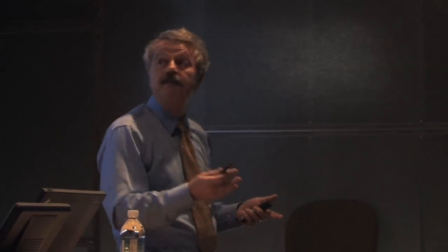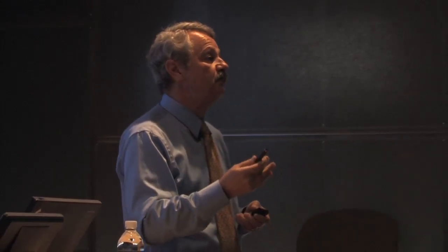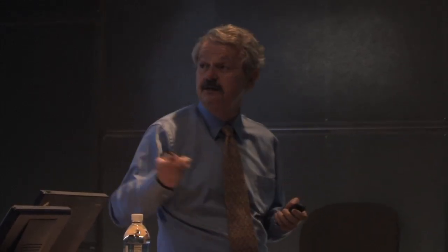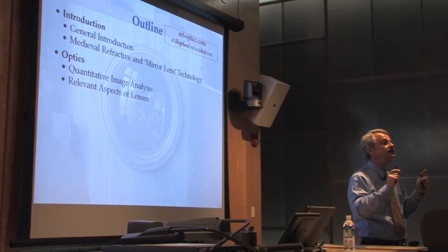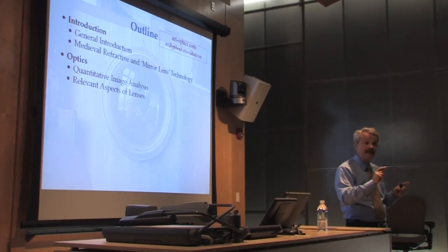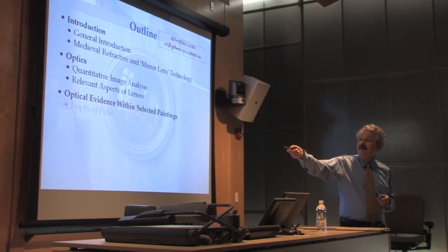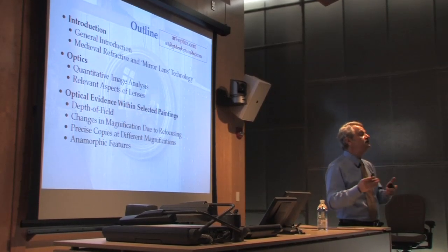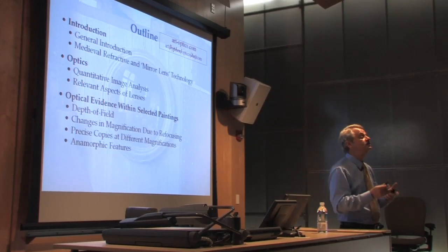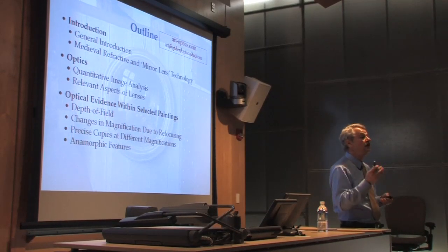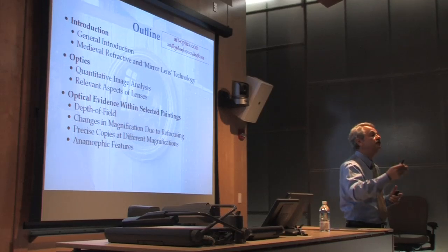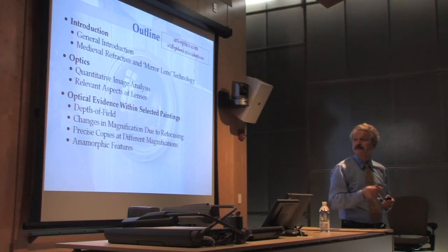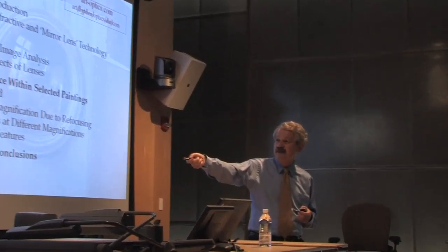I'm going to give you an introduction to what this is all about, talk about optics in medieval times — because that's essential to understand what was possible for early Renaissance artists like Jan van Eyck to do — then briefly review optics, then show optical evidence in selected paintings demonstrating that artists as early as Jan van Eyck in 1432, almost 200 years before Galileo, were using optical projections to help capture certain features in portions of paintings.